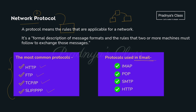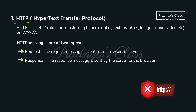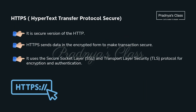For forwarding mail, the protocols are IMAP, POP, SMTP, and HTTP. The first protocol is HTTP — remember the full form. HTTP is a set of rules used for transferring hypertext, which can be text, graphics, images, sound, or video. There is also HTTPS, the secure version of HTTP, where S stands for secure. It is secure because it transfers data in encrypted form.